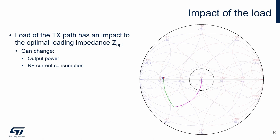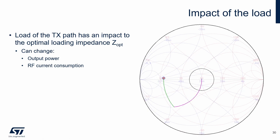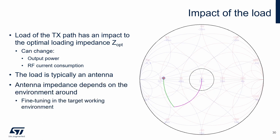The load of the transmitter path has an impact on the optimal loading impedance. Different loading impedance may change the output power and RF current consumption. In the Smith chart, we can see a simple example of a matching network from 50 ohms to the optimal loading impedance. If we change the load around the circle of constant SWR of 1.5, we can see how the load impedance into which the power amplifier operates is changing. The load is typically an antenna, and the impedance of the antenna depends on the surrounding environment. To have the best parameters, fine-tuning in the target working environment is needed.